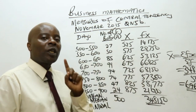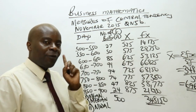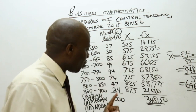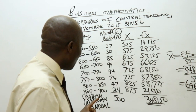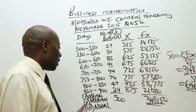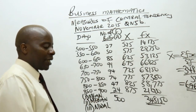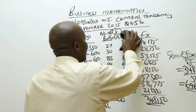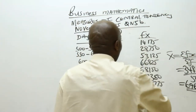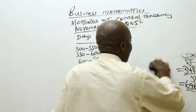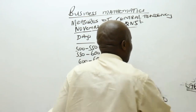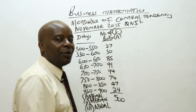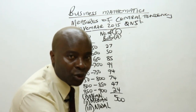I expect you to calculate the mean of part B later. Allow me to continue with the same question and tackle the median. By definition, the median is that statistical value that subdivides a distribution into two equal parts.